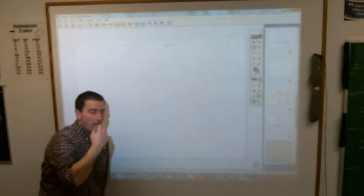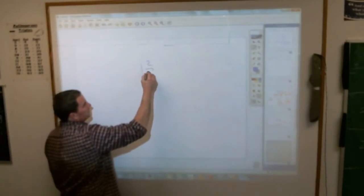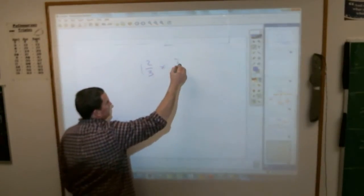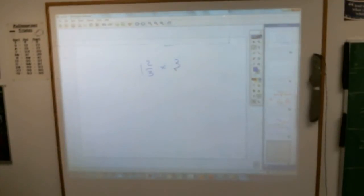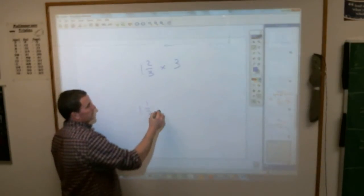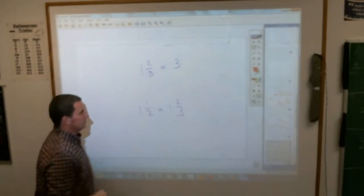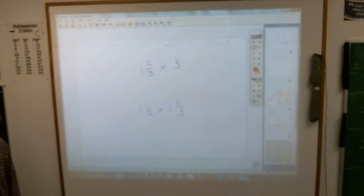Sound relatively simple? Let me give you a couple to try. How about 1 and 2/3 times 3? And maybe 1 and 1/2 times 1 and 2/3. On your assignments, of course, you need to write down the problem as it is there and then follow those steps.